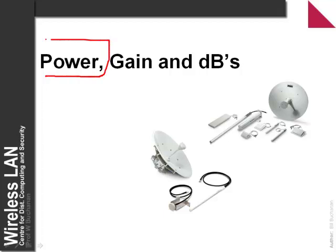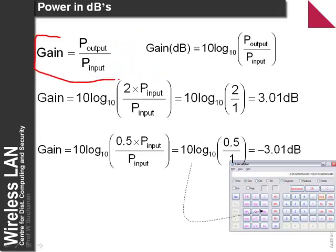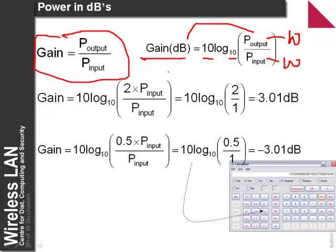A key terminology for us is power, defined by the gain in power, and typically measured in decibels. We need to understand how to convert from gain into decibels. Gain is the power out divided by the power in — we might get an increase or a decrease. If the power is measured in watts, we convert to decibels by taking log base 10 of the ratio of output to input power, multiplied by 10.